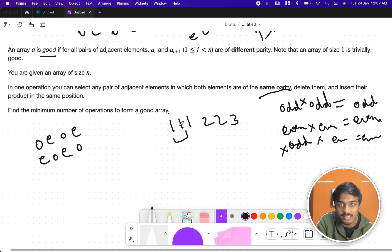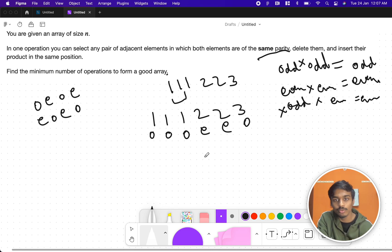Suppose let's say this is the example: 1, 1, 1, 2, 2, 3. What is the parity of this? First one is odd, odd, odd, even, even, odd. So the best way we can do is if we want this to be good, we just make odd, even, odd. There should be only three numbers.